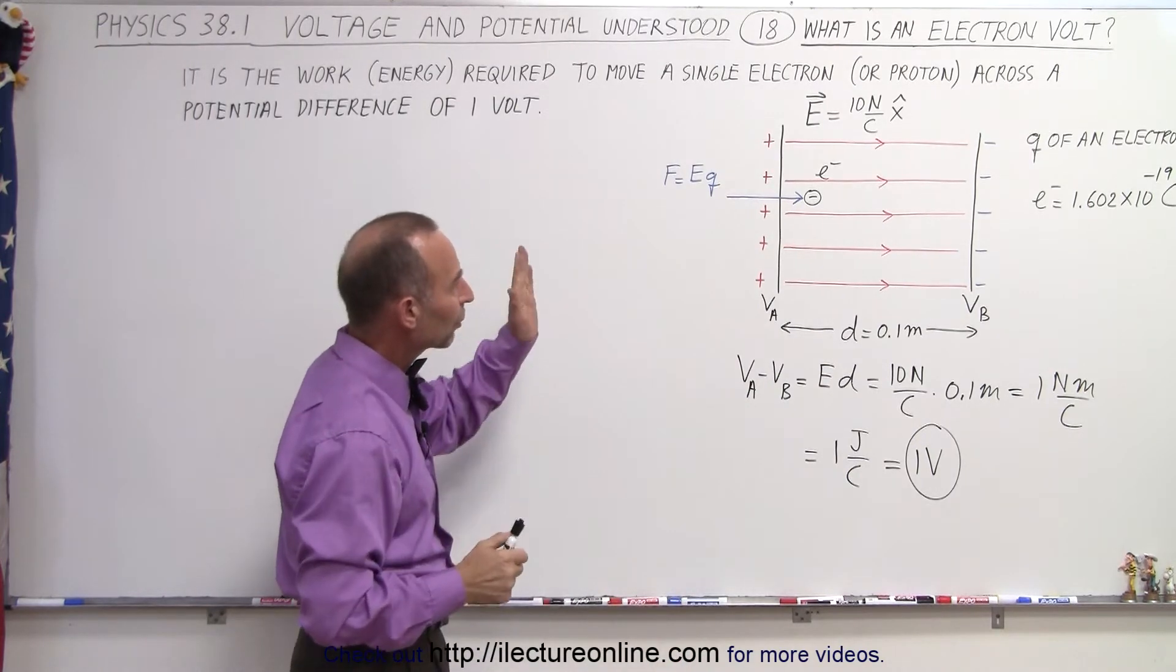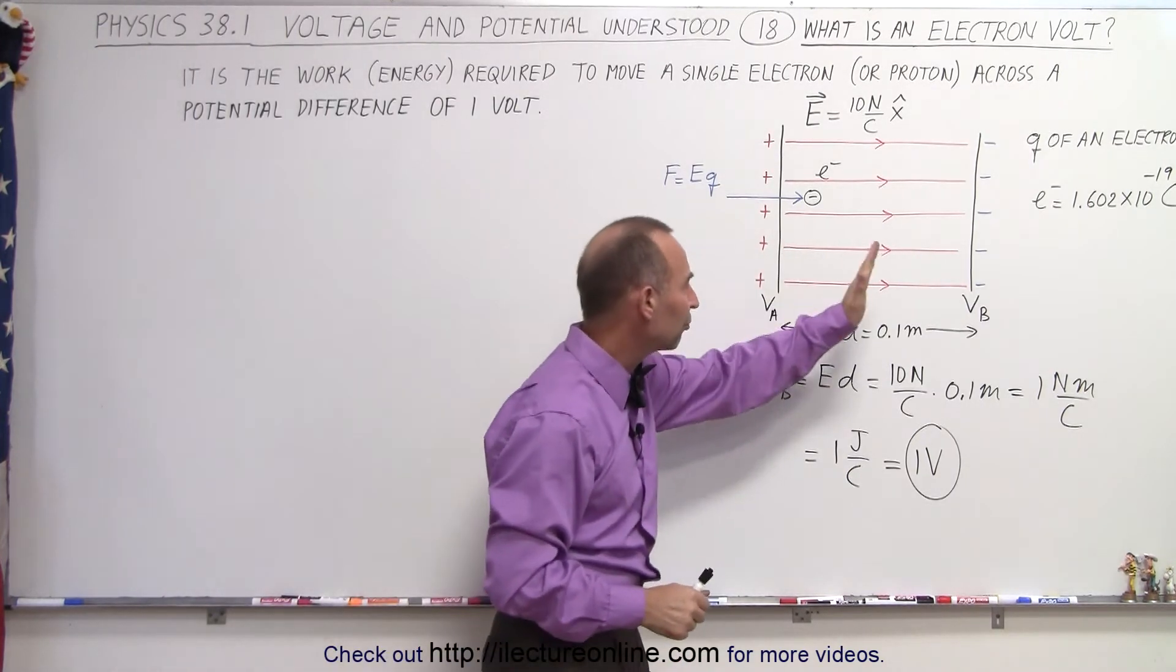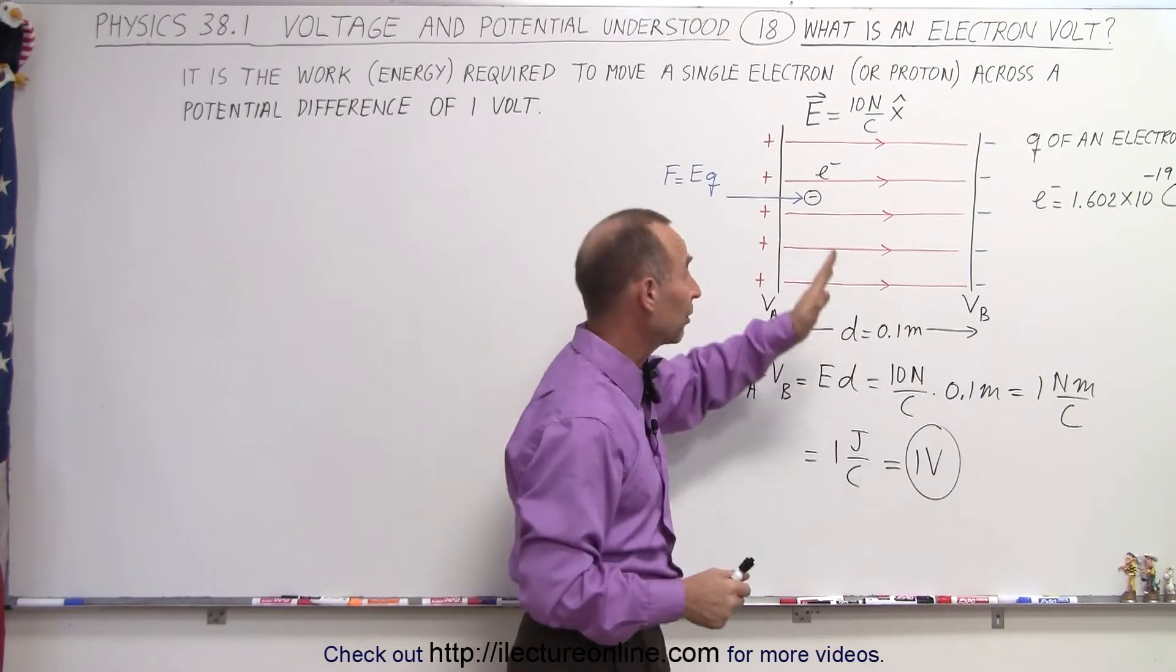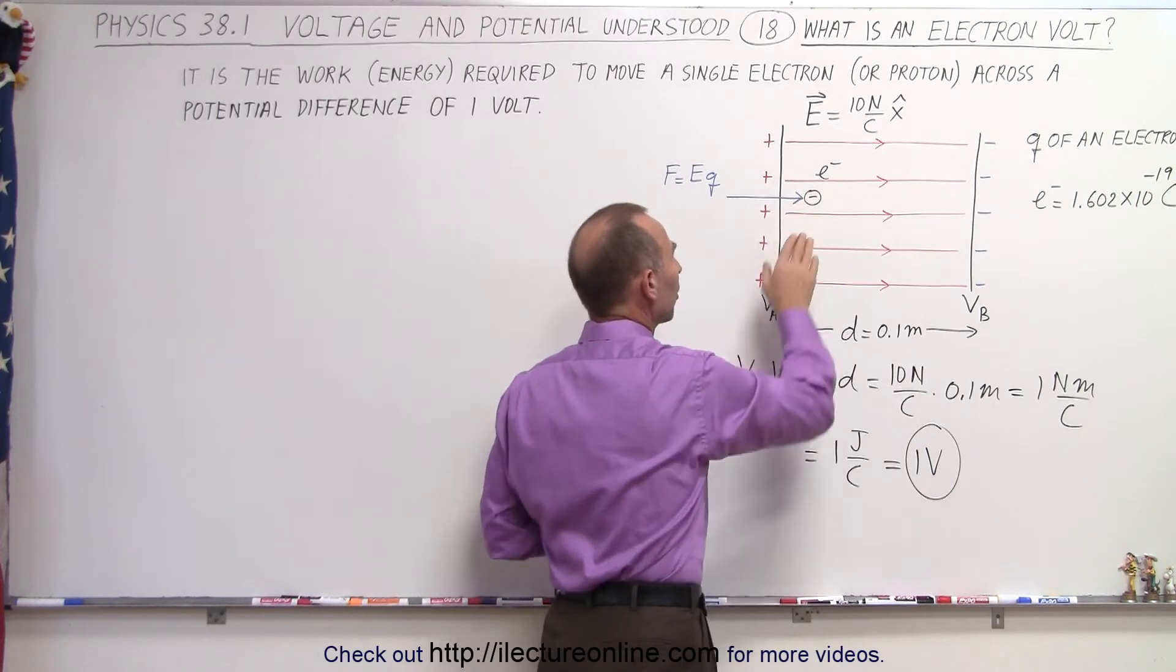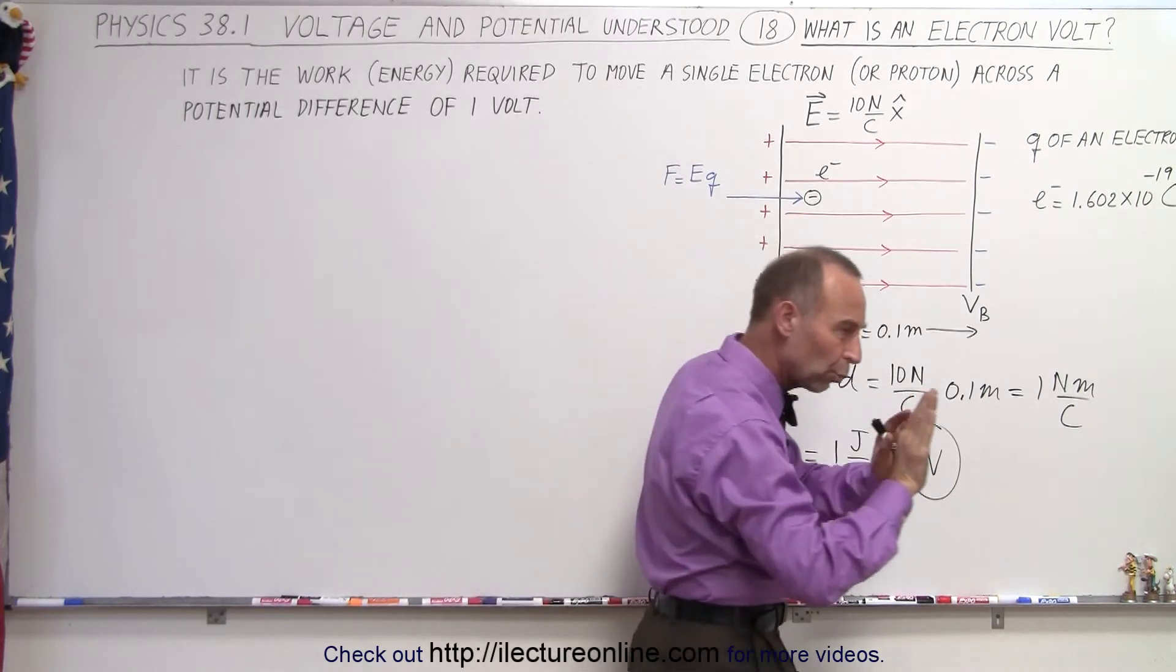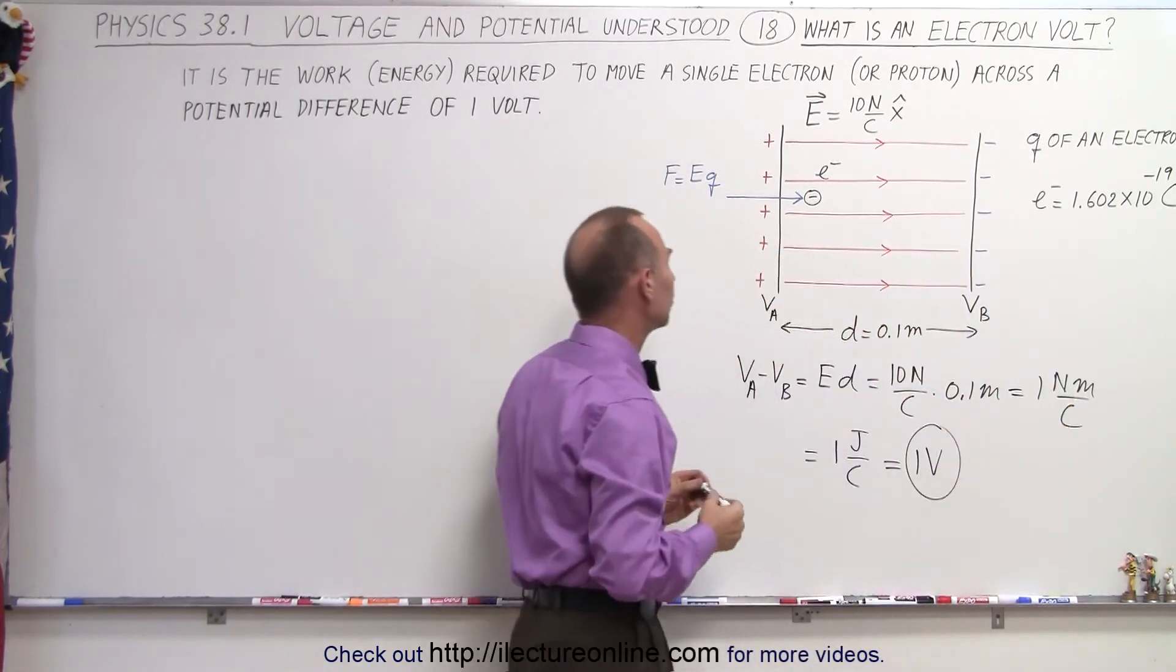Now the work required to push an electron across from A to B, and of course the electron doesn't want to be there because there's additional negative charges, and it's being attracted to the positive charges. So you will have to push and do work to get the electron to move to the other side.